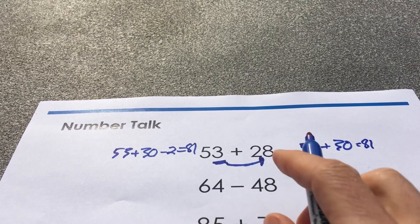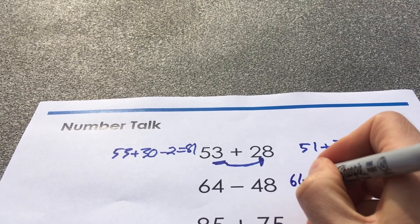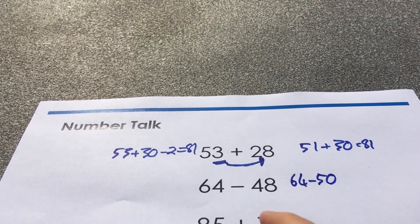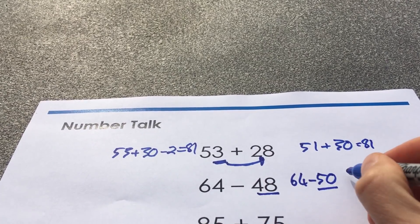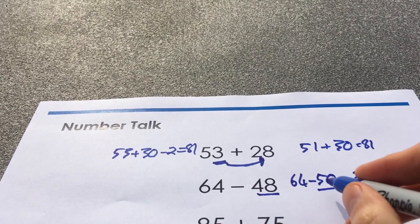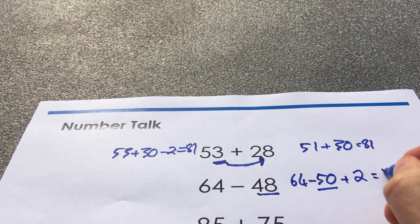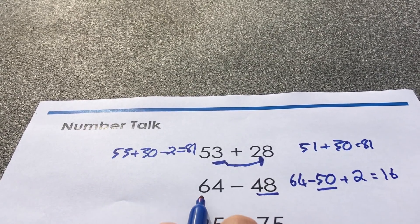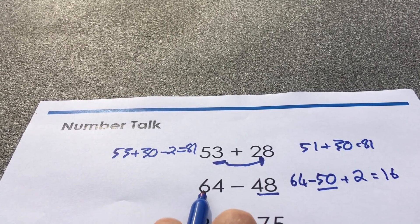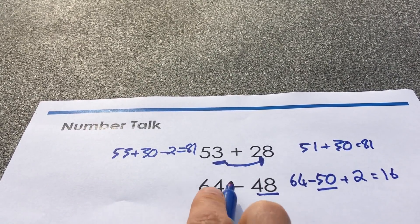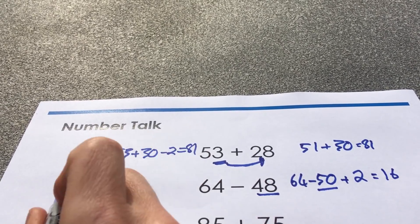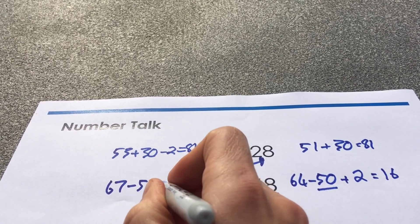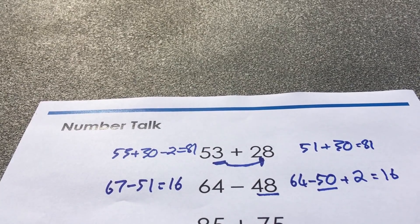64 subtract 48. I think I'd probably do 64, I'd start by taking away 50. And I'd have to think, 48 to 50, I've taken away two too many. Let's add those back on. 64 take away 50 is 14, add the two, 16. I could use this idea of constant difference. So let's just add the same number to both of these numbers, then the difference will be the same. 67 subtract 51 is 16. Oh I do like that one.